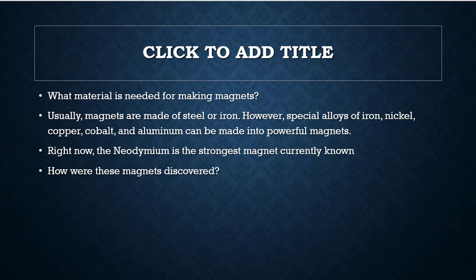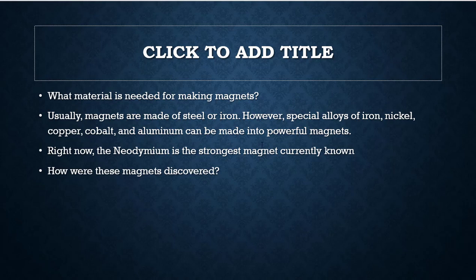Which materials are needed to make magnets? You know that a toy contains some magnet behind it — that is why that metal sticker stuck to the metal door. Usually, magnets are made up of steel or iron. However, special alloys of iron, nickel, copper, cobalt, and aluminium can be made into powerful magnets. The strongest magnet currently known is neodymium. These are the magnets made by humans. Then what is the natural magnet, and who discovered it first?